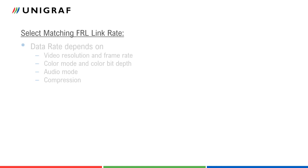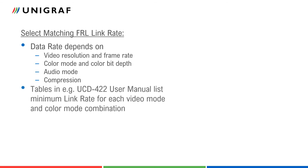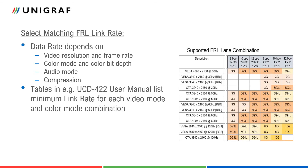Let us see how to select the link rate. The data rate is the amount of data sent over the link. It depends on the selected video resolution and frame rate, as well as the selected color mode and color bit depth. The used audio mode and compression also affects the amount of data sent. Link speed calculations are pretty complicated, so the easiest way is to use the tables found in the UCD422 user manual.